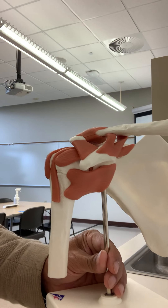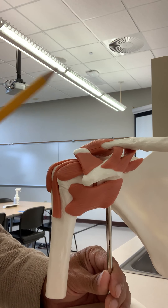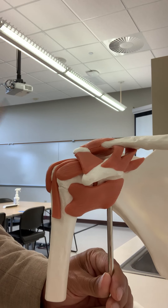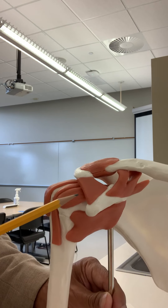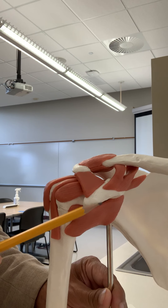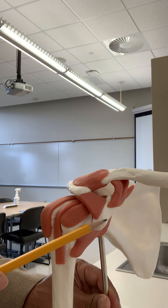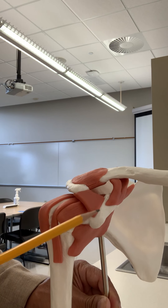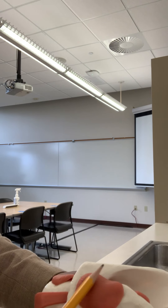Now we will see the ligaments in the shoulder joint. Around the shoulder joint you have a number of ligaments that keep the joint stable. This part of the scapula is called the coracoid process and this part is called the acromion. This ligament connecting the coracoid and acromion is called the coracoacromial ligament.